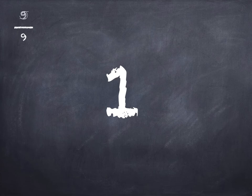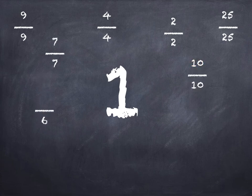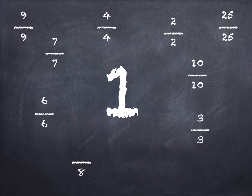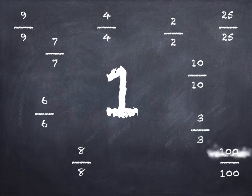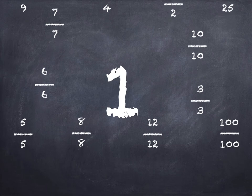Let's have a look at the pattern. Nine ninths equals one. Four quarters is one. Twenty-five twenty-fifths is one. Two halves is one. Seven sevenths equals one. Ten tenths equals one. Six sixths equals one. Three thirds equals one. Eight eighths equals one. One hundredth equals one. Five fifths equals one. And twelve twelfths equals one. They all equal one.